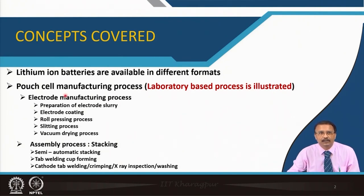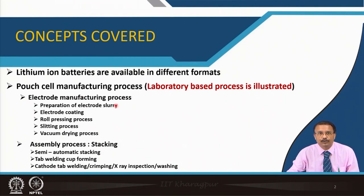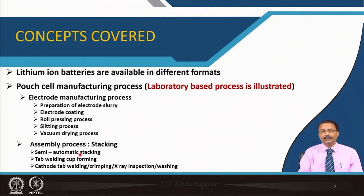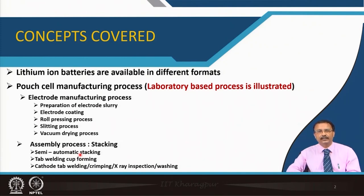The pouch cell manufacturing process also has an electrode manufacturing process which includes electrode slurry preparation — basically the same as for the cylindrical cell — electrode coating, then roll pressing, then slitting, which is slightly different here, and a vacuum drying process. Then there is an assembly process which is not winding but a kind of stacking, one layer after another, to form a flat structure.